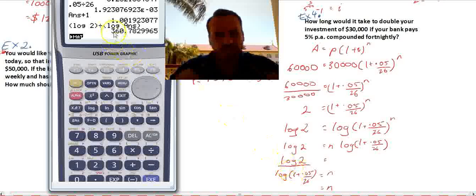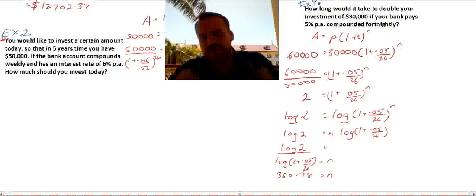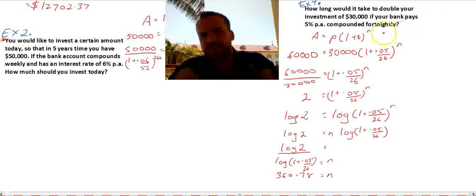Put that into your calculator and you should end up with some kind of answer. Now, that gives us an N of 360.78. And you really need to stop here and think about what you've done again.